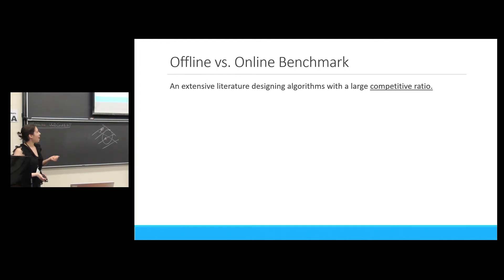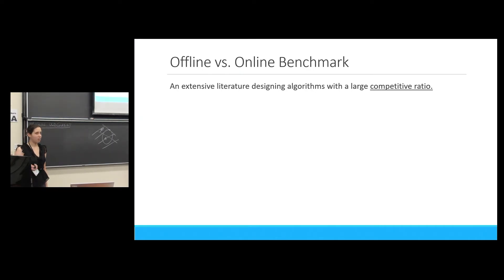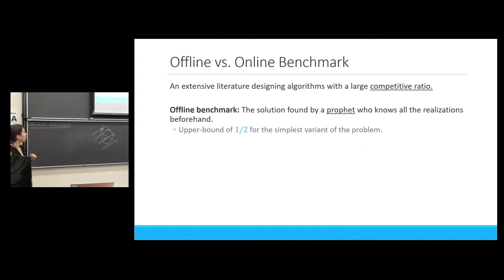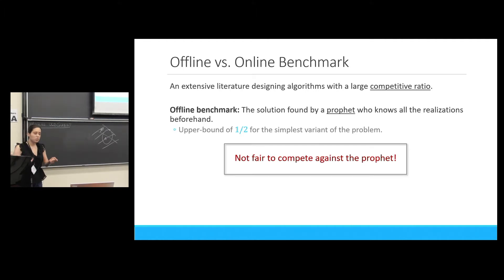As you saw in the previous talks, most of the literature focuses on designing algorithms with a large competitive ratio for online matching. That is defined with respect to the offline benchmark — a solution found by a prophet who knows the realization of all the edges beforehand and can find the optimal match. But with respect to this offline benchmark, we know that even for the simplest case we can't get better than a half approximation, because it's a very strong benchmark and not a fair competition since we don't have that extra information.